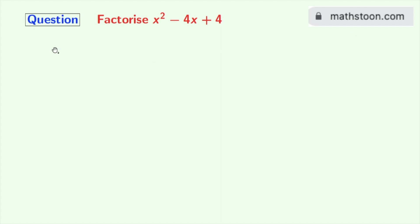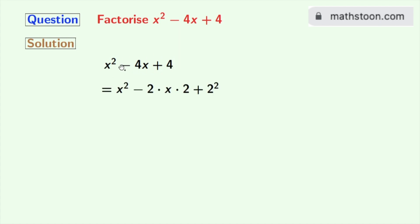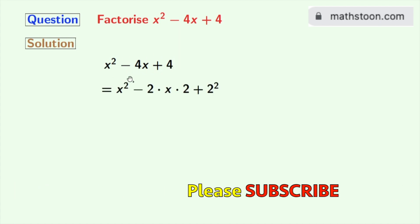Now let's start. Our given equation is this. At the first step, we will keep x squared the same and express 4x as 2 times x times 2, and 4 as 2 squared.